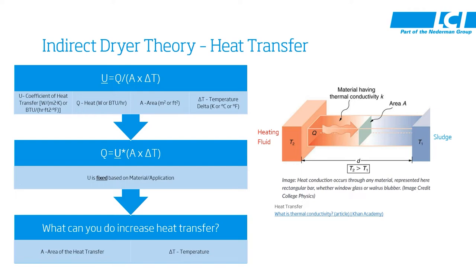Now instead of the thermal conductivity term, we use a coefficient of heat transfer. This is represented by the letter U and equals the heat Q divided by the dryer area times the delta T, or the temperature difference between the two mediums. In order to calculate how much heat we can get into a certain application, we rearrange that equation to say Q equals U, the coefficient of heat transfer, times the area of the dryer times the delta T of the two mediums.